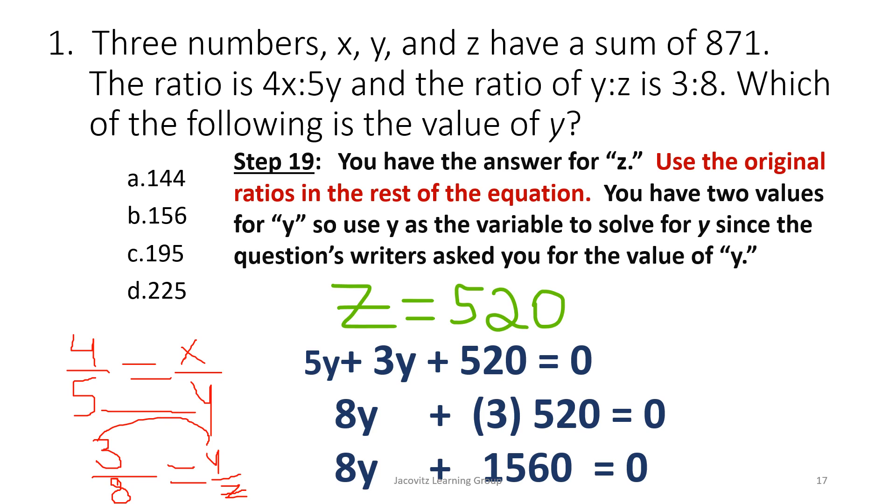Okay. 5y, 3y, 8y. Where are you getting this 3? You have z's value. You're getting this 3 from the value of y. And why aren't you doing the 5? Because we're doing it in relation to y. Y is ratio to z. So you had an extra 3. Multiply it. 8y plus 1,560.